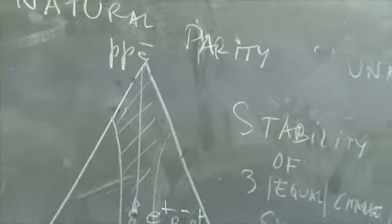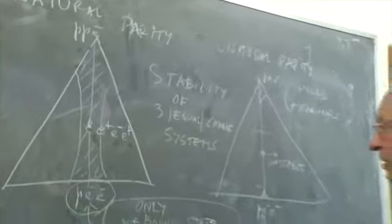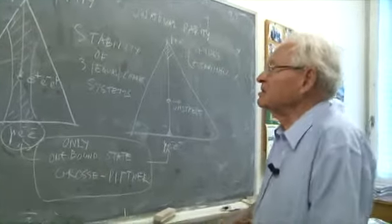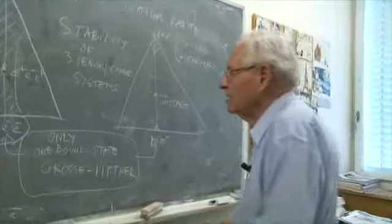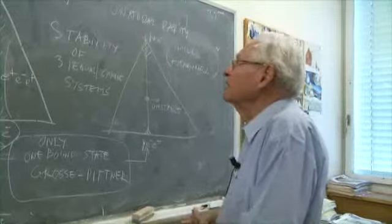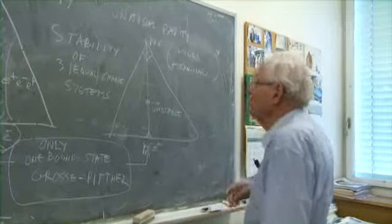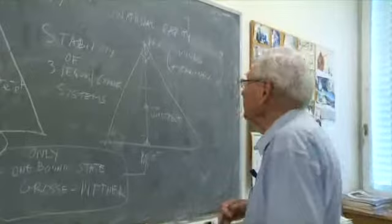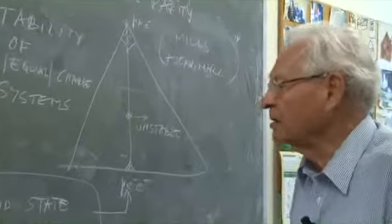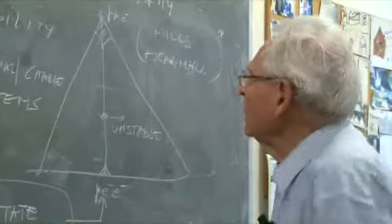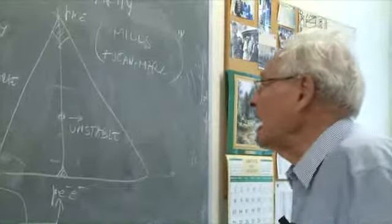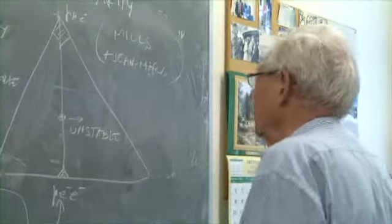But now, of course, we know that there exist states with natural parity, parity being equal to minus one to the L, but there are also states with unnatural parity, which were predicted, for instance, by Alexander Drax years ago. And then you can repeat the same, redraw the same diagram for unnatural parity.